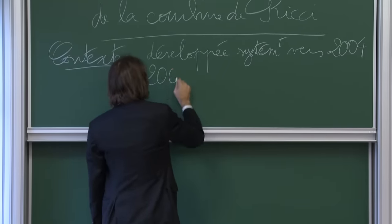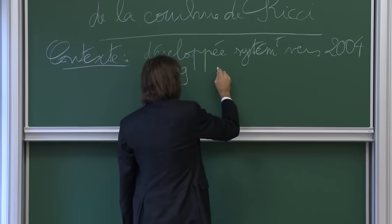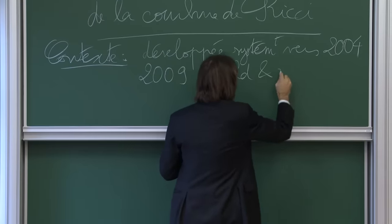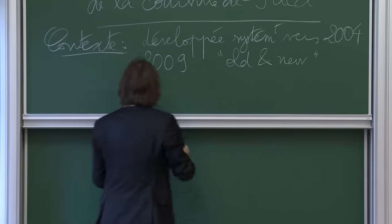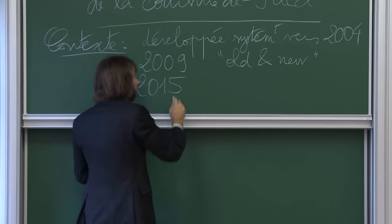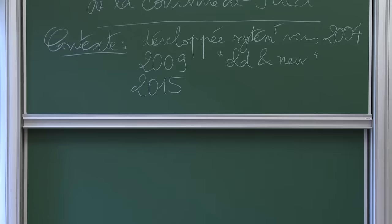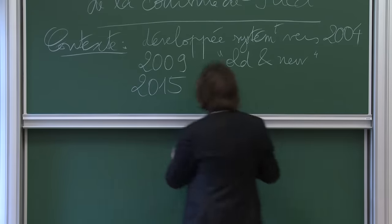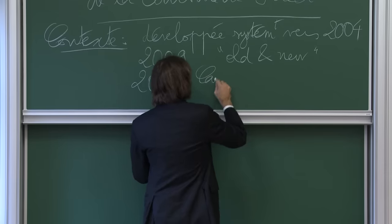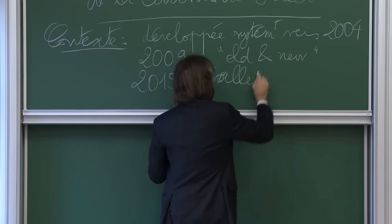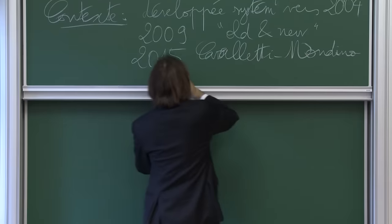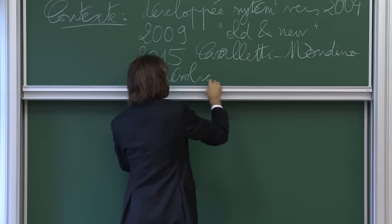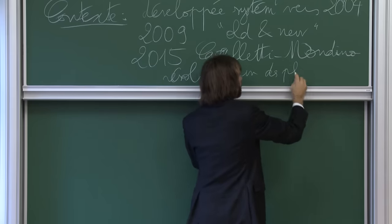En 2009, mon livre « Optimal Transport, Old and New », que j'appellerai Old and New chaque fois qu'il y aura besoin. Et en 2015, la résolution de l'un des problèmes ouverts présentés dans le livre, qui me tenait particulièrement à cœur, par deux chercheurs italiens : Cavalletti et Mondino résolvent un des problèmes ouverts majeurs du livre.